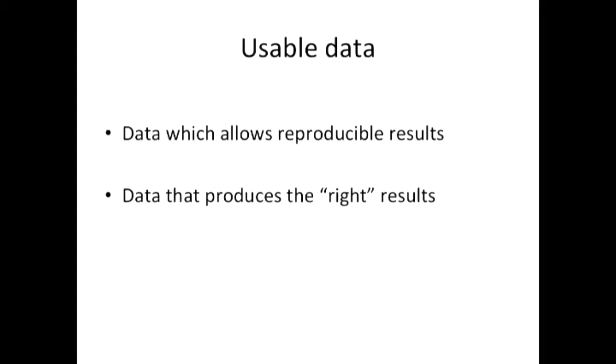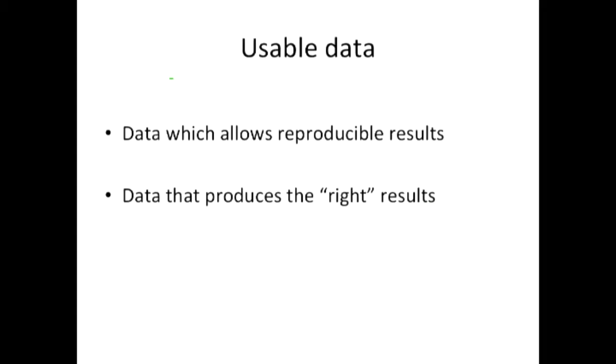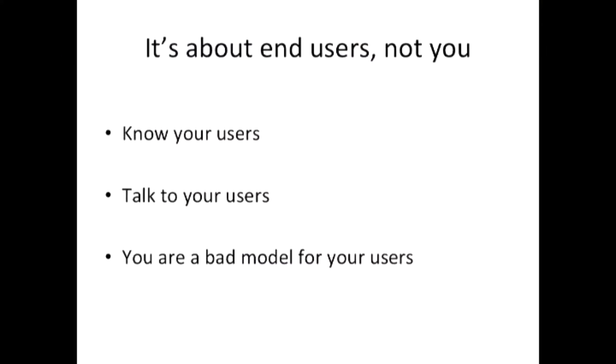This concept of usable data — we want to release open data which provides for reproducible science. If you're releasing data, you need to think about releasing it with all the information people need to redo the science that you've done, so that they can use it in their own area and their own work. But they need to get the right results. We need to avoid garbage in, garbage out. And that means talking about how the data was collected, why the data was collected, and whether adjustments were made to it. When we talk about UX, an absolutely fundamental component is: you are not your users. You need to get out there and think about the users who aren't like you, talk to them, and recognize that you're a bad model for your users.